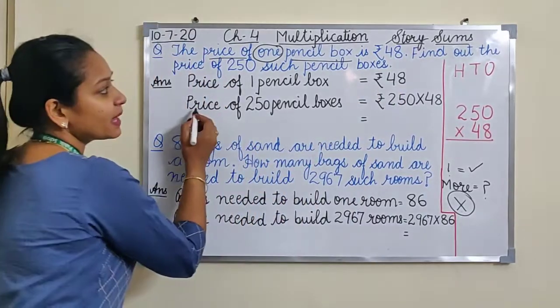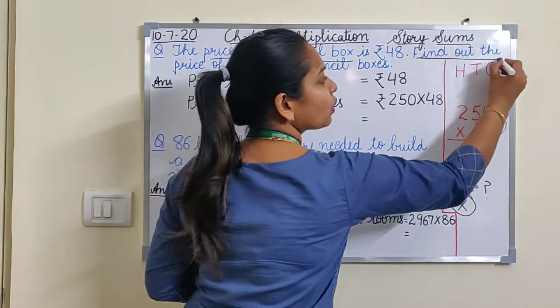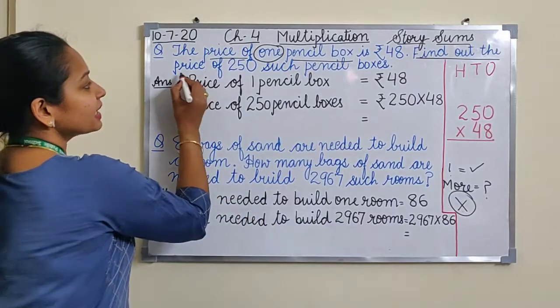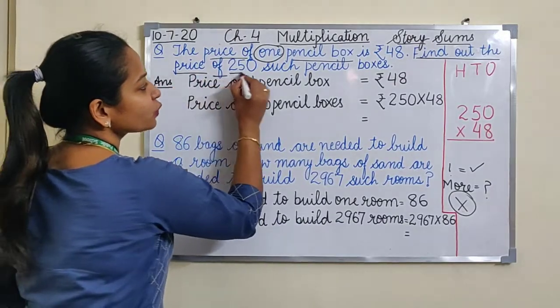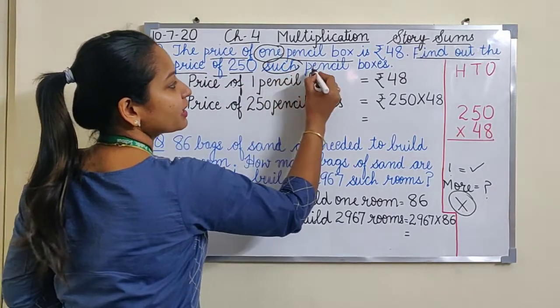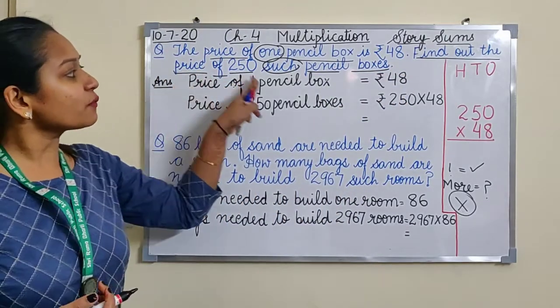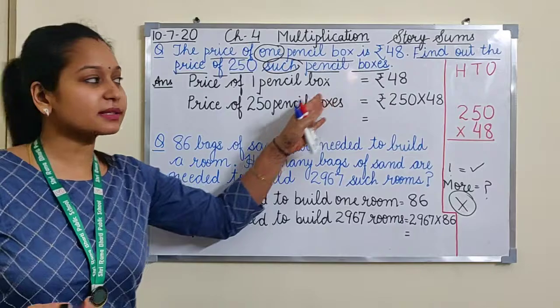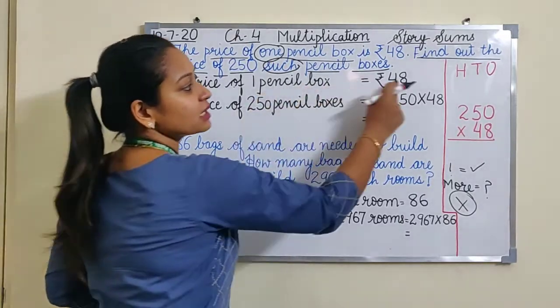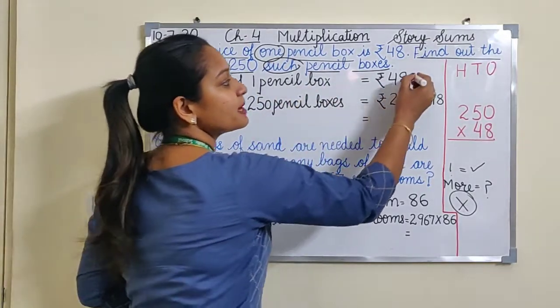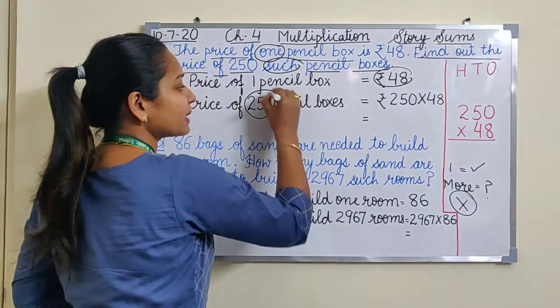Price of one pencil box - simple statement from here we have picked. Rupees is 48. Then from next line, what we have taken: price of 250 pencil boxes. Kyunki ye one ka diya hua hai aur zyada ka nikalna hai, toh abhi hum in dono numbers ko multiply karenge.